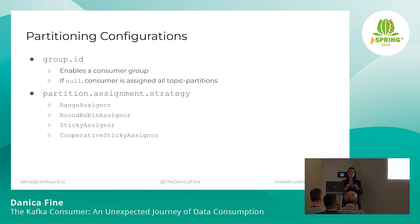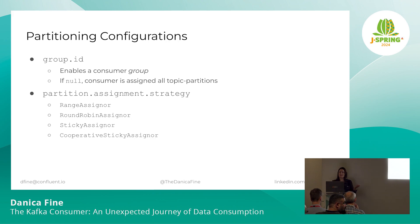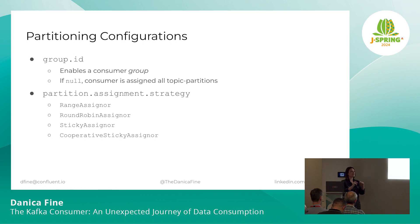The range assigner won't evenly distribute all the partitions across consumers as optimally as some of the other assigners could, but it ensures that for your joins to be completed, you have all the data you need on a single consumer instance. Then we have the round robin assigner — it looks at all of the topic partitions that we are currently subscribed to, takes the first topic partition and gives it to the first consumer, the second to the second, and so on. It's going to pretty optimally distribute those partitions across all the running consumers in the group.